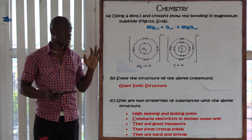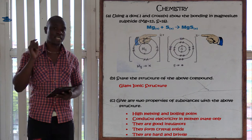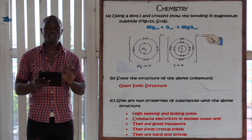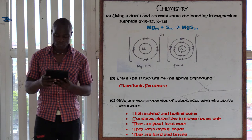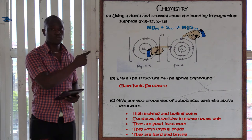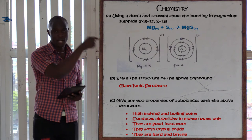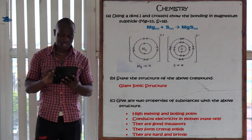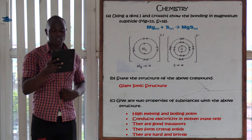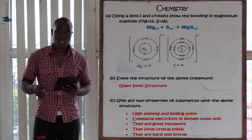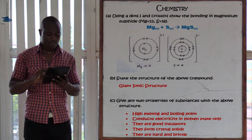When drawing the ionic bond diagram, you must show that one element has lost two electrons and the other has gained two electrons. The structure of magnesium sulfide (MgS) is a giant ionic structure. Remember: if asked for the bond, say 'ionic bond'; if asked for the structure, say 'giant ionic structure.'